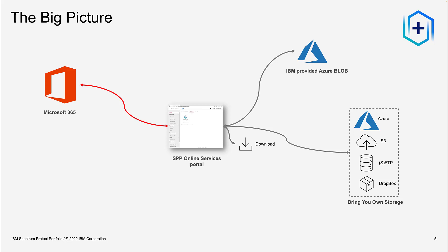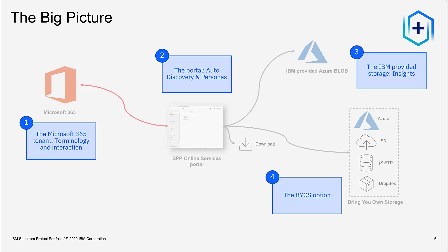The high-level architecture: on the one hand, we have the Microsoft 365 tenant that's owned by the user — the customer. Then we have the SPP Online Service portal that's running in IBM's Azure instance. On the right hand, we have the IBM-provided Azure Blob Storage and the option for the customer to bring their own storage.